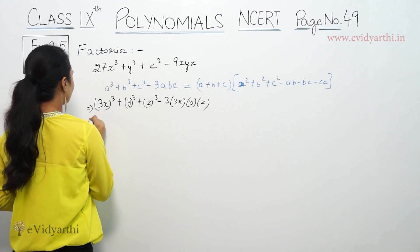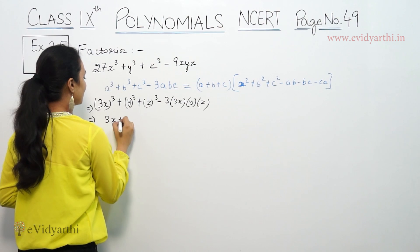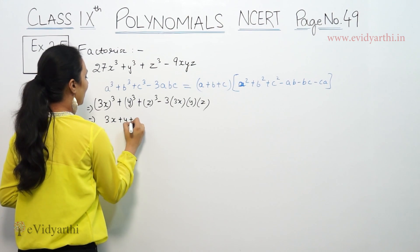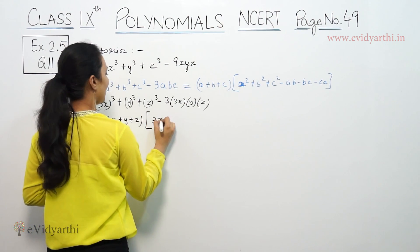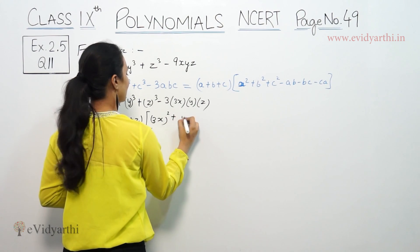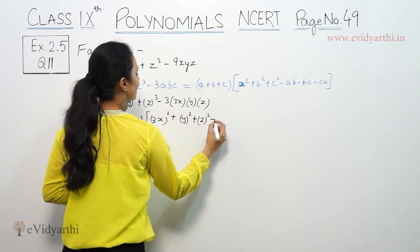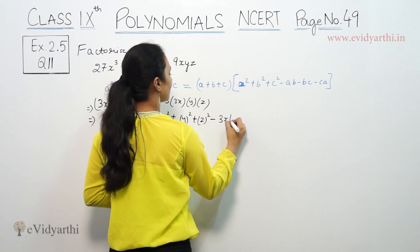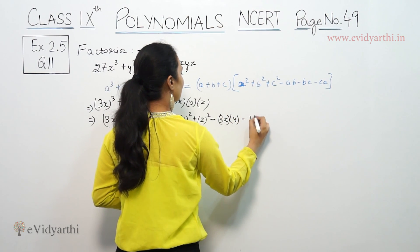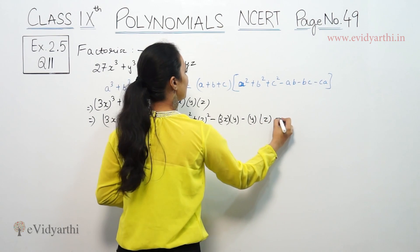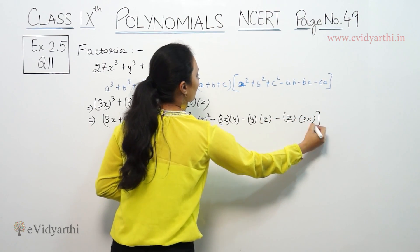So we can write this in the factored form. We have a plus b plus c, where a is 3x, b is y, and c is z. The second factor is a squared plus b squared plus c squared minus ab minus bc minus ca.